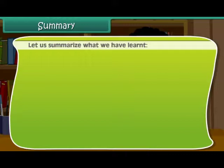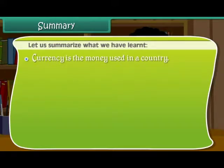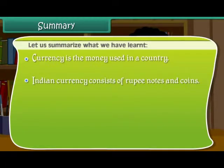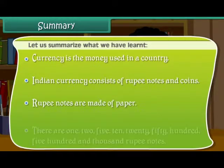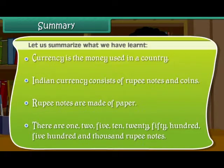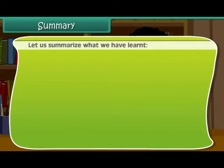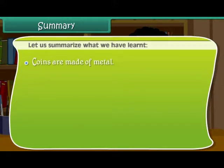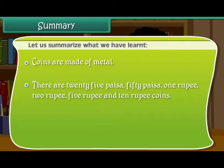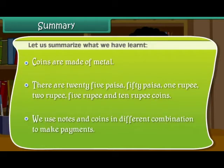Let us summarize what we have learnt. Currency is the money used in a country. Indian currency consists of rupee notes and coins. Rupee notes are made of paper. There are 1, 2, 5, 10, 20, 50, 100, 500 and 1000 rupee notes. Coins are made of metal. There are 25 paisa, 50 paisa, 1 rupee, 2 rupee, 5 rupee and 10 rupee coins. We use notes and coins in different combinations to make payments.